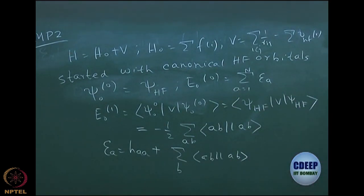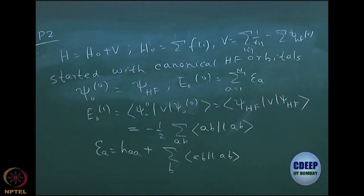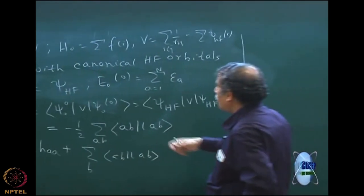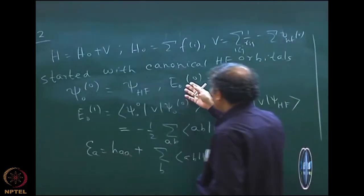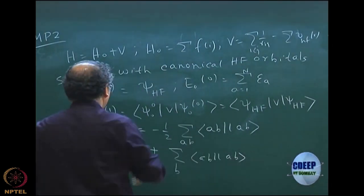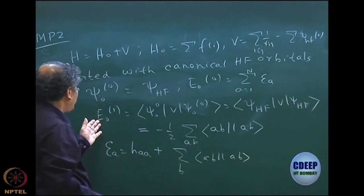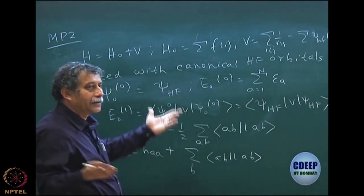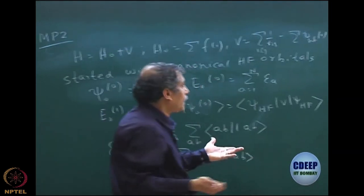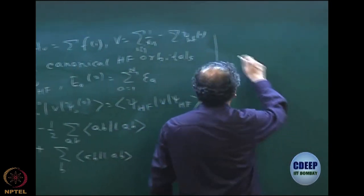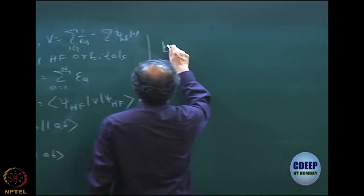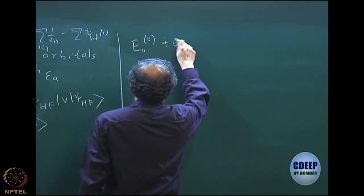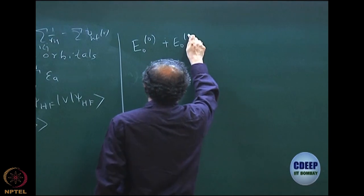I want to make sure that you understand in terms of Slater rules. E naught 0 is ⟨psi-0,0 | H naught | psi-0,0⟩ and E naught 1 is ⟨psi-0,0 | V | psi-0,0⟩. Their addition gives you the Hartree-Fock energy. So E₀⁰ plus E₀¹ equals the Hartree-Fock energy.